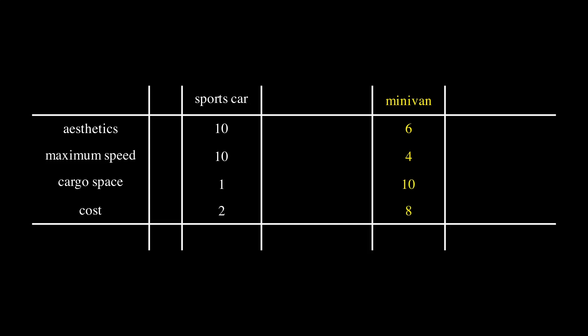The weighted part in the term weighted decision matrix brings our personal preferences into the game. We will assign values to each criterion that impacts how the score of each criterion will be taken into account for the end result.